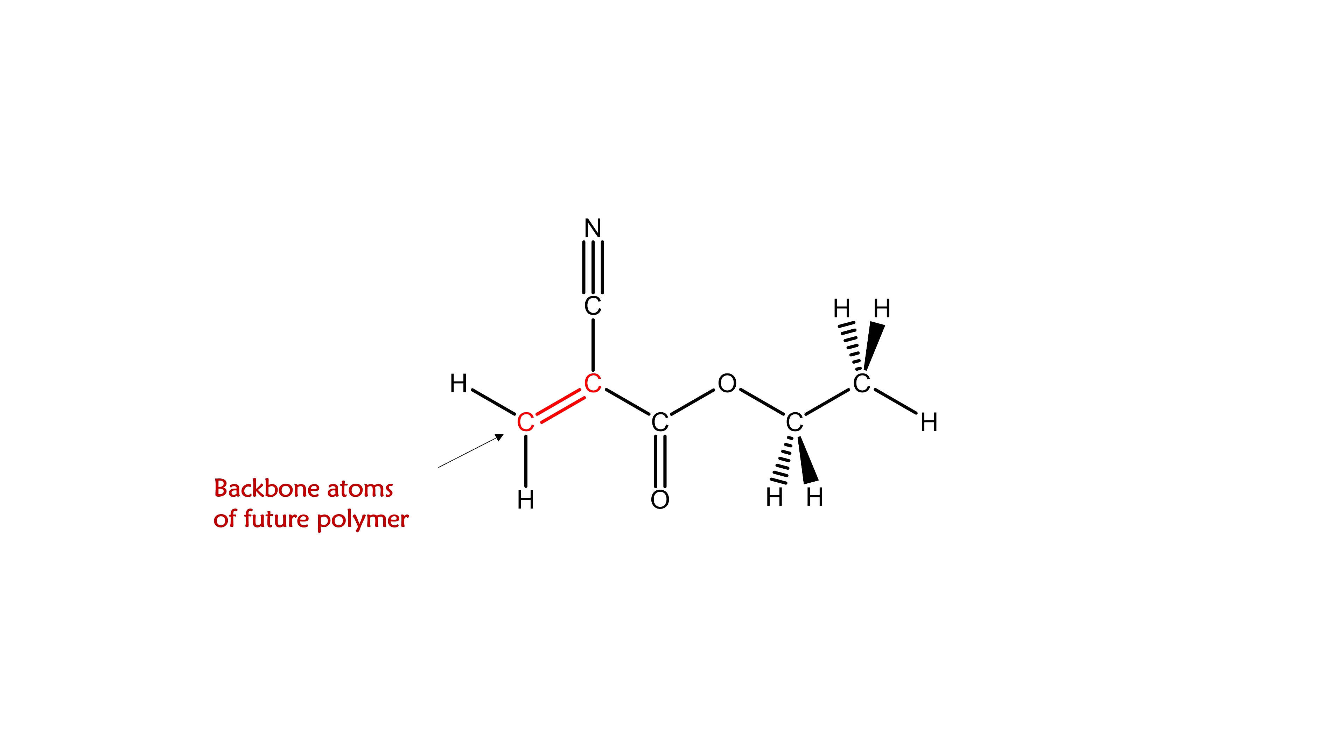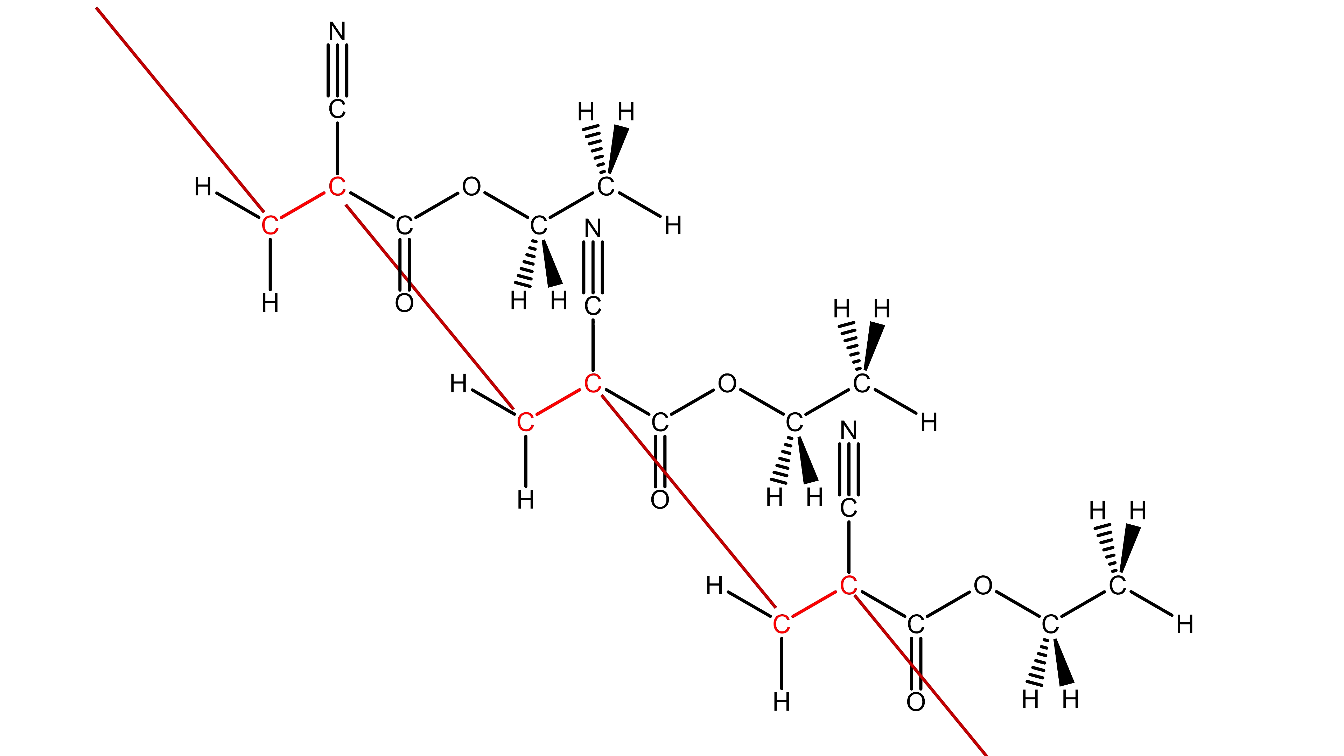The backbone of the polymer chain is formed by the carbon atoms involved in this carbon-carbon double bond. During polymerization, this double bond becomes a single bond, and each of those carbon atoms form a new single bond with a carbon atom from a neighboring ethyl cyanoacrylate molecule.